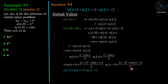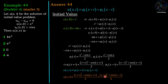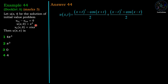Therefore u(x,t) equals ((x+t)³ minus cos(x+t)) divided by 2, plus ((x−t)³ plus cos(x−t)) divided by 2. This is the solution of the initial value problem. Now we want to evaluate u at (π, π), that means x equals π and t equals π in the solution.